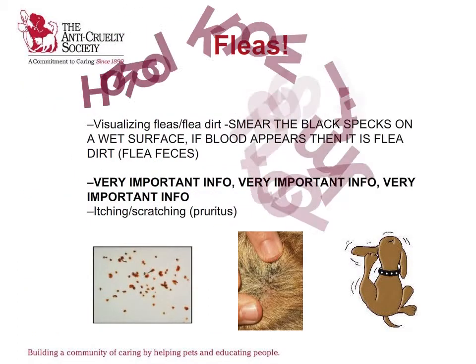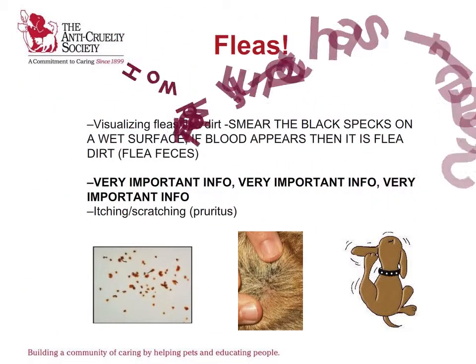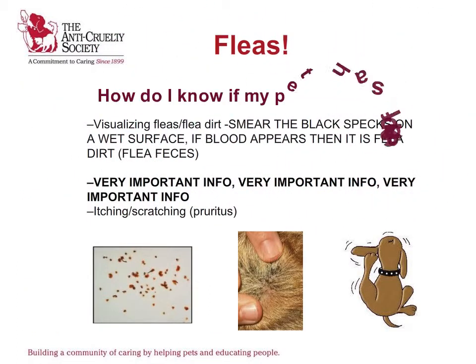If your pet has very persistent itching and scratching, they may have fleas. To detect if your pet does indeed have fleas, you will need to examine and determine if you see flea dirt. If flea dirt is present, you should put some on a wet surface and smear. If blood is present, your pet has fleas.